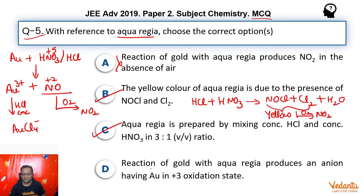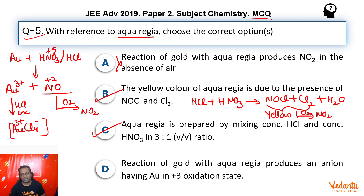If air is present, Au further oxidizes to NO₂. So Option A is incorrect — in the absence of air we will not get NO₂. For Option D: the reaction of gold with aqua regia produces an anion having Au in +3 oxidation state, so yes it is an anion in which gold is in +3 oxidation state. Option D is correct.